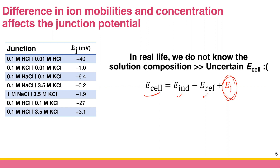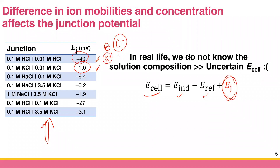There are ways to predict junction potential. Consider the first two entries in the table: hydrochloric acid has a junction potential of +40 millivolts, while potassium chloride has only about 1 millivolt. This is because proton is much smaller than chloride, giving a large potential difference. Potassium and chloride have relatively similar sizes, so the potential difference is much smaller — that is why potassium chloride has much lower junction potential.